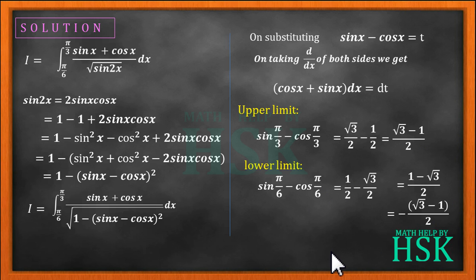Therefore on substitution, we get I as equal to 1 by square root of 1 minus t square dt from the limit minus root 3 minus 1 upon 2 to root 3 minus 1 upon 2.